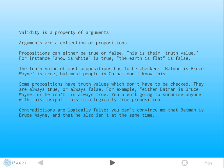A few propositions are interesting. They have truth values which you don't have to check. They're either always true or always false. For example, if I say either Batman is Bruce Wayne or he ain't, that's always true. You're not going to surprise anyone with this insight. It's a logically true proposition. You don't have to check—either something is or it isn't. On the other hand, we have logically false propositions such as contradictions. You're not going to convince anyone that Batman is Bruce Wayne and that he also isn't at the same time. That's impossible. I don't need to check in the world. I don't need to check that a triangle has three sides and it doesn't have three sides. That's crazy.